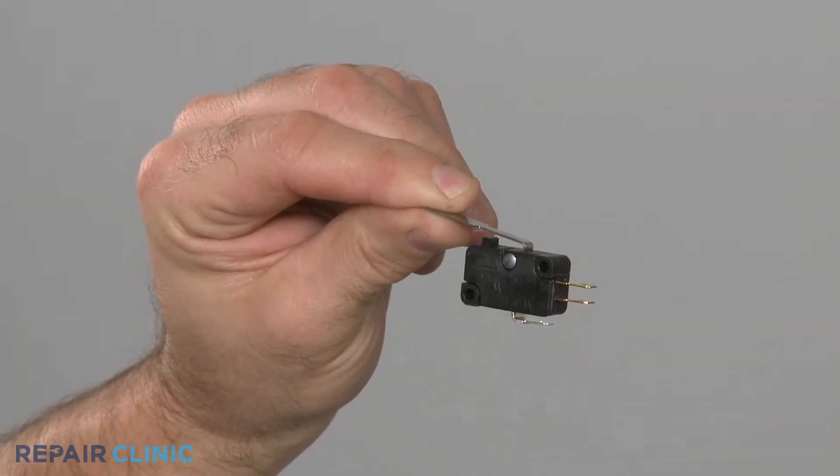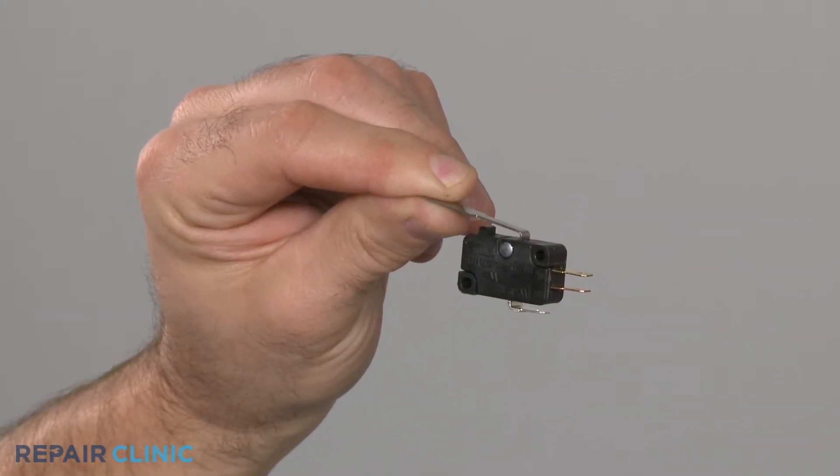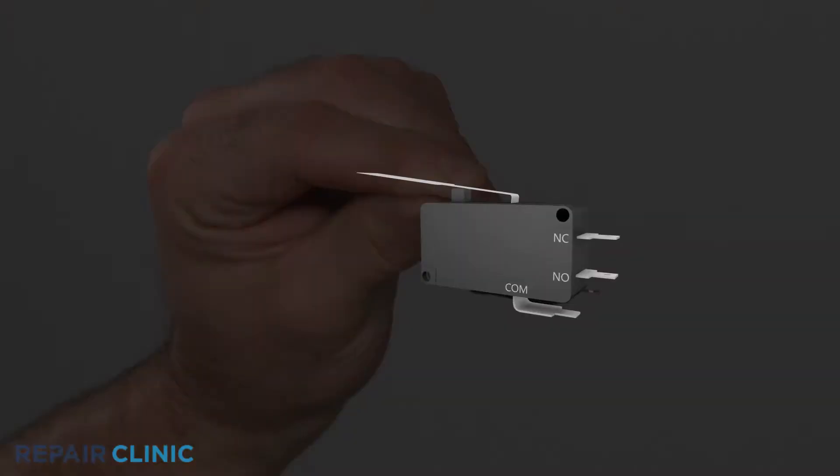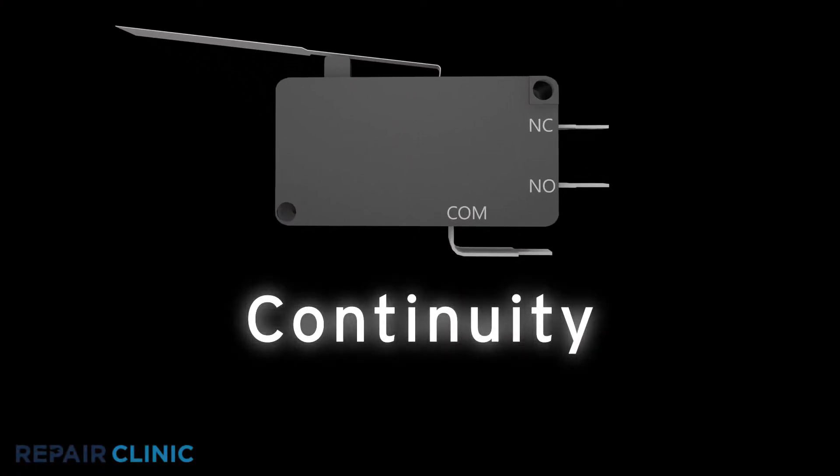Since you can't always tell if a switch has failed simply by looking at it, you'll need to perform a continuity test. A continuity test will determine if a continuous electrical path is present in the switch.